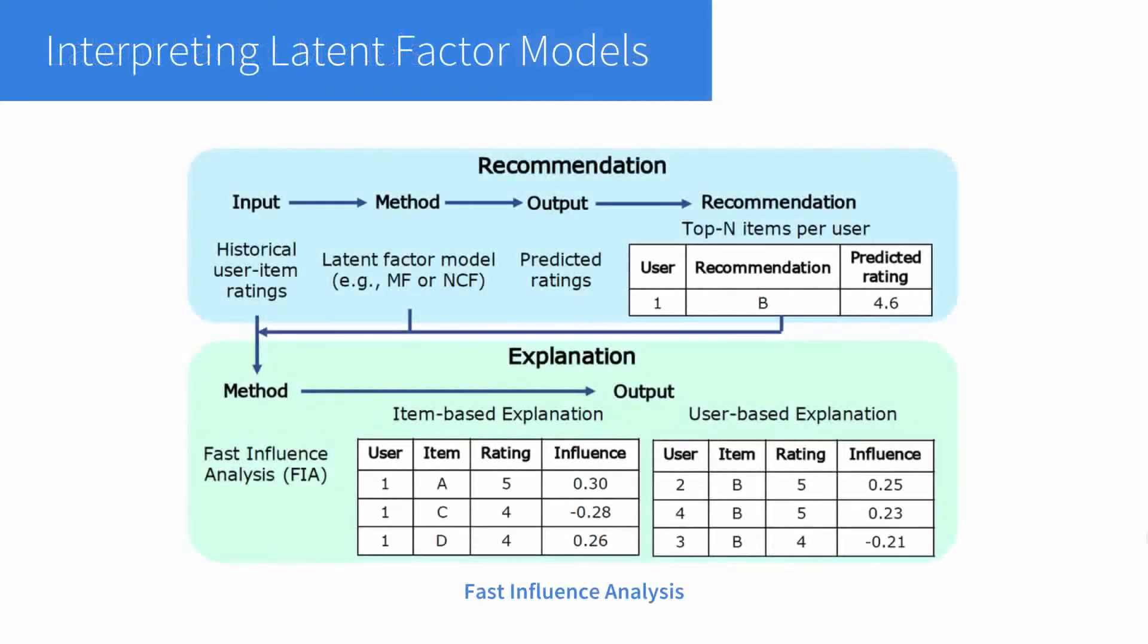In this paper, we propose to interpret the recommendation results of latent factor models using influence functions. For example, a matrix factorization model predicts user 1's rating on item B to be 4.6, and thus recommends item B to user 1.